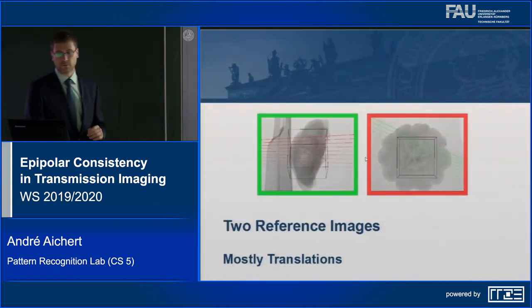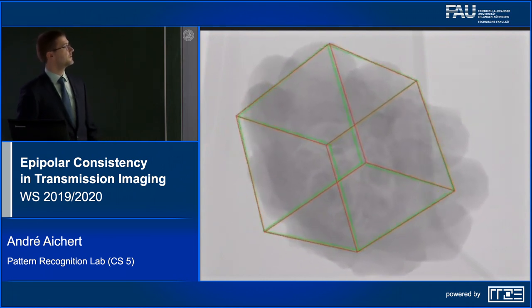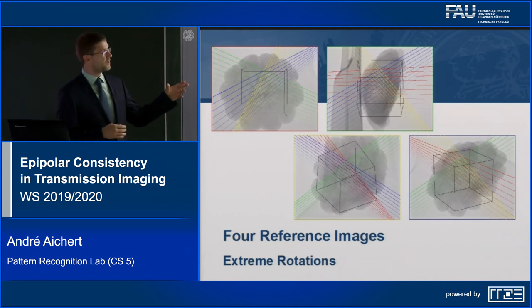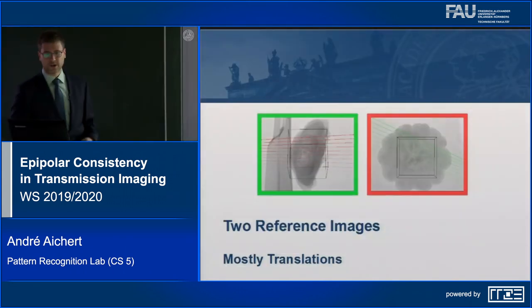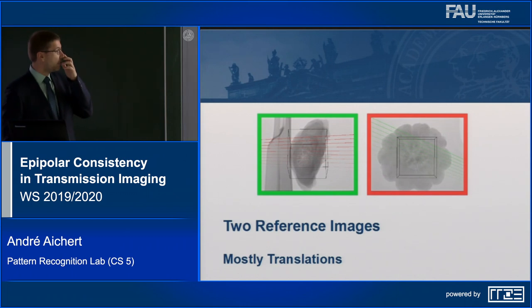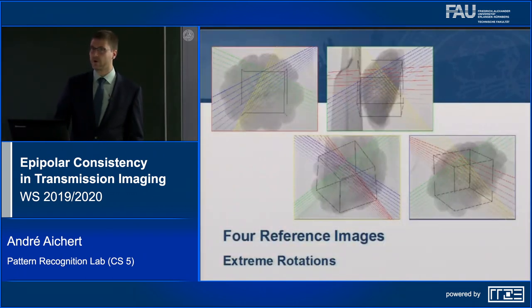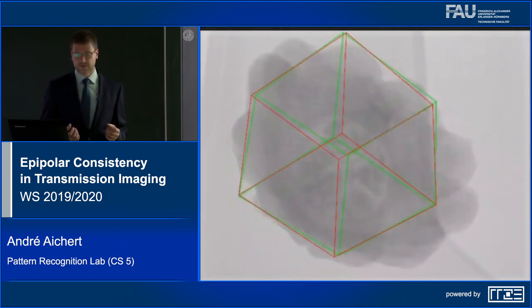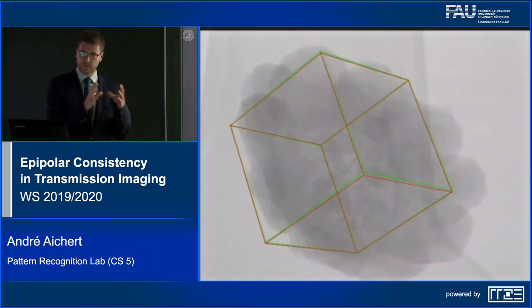A short video shows the tracking results: with two reference views, the algorithm tracks minor translational motion — green is the ground truth, red is our estimate, and it follows well. With four reference views and rather extreme motion, the red bounding box still follows the green ground truth. The remarkable point is that we have no prior knowledge of the object — only two or five reference views, far too few for a 3D reconstruction — yet we're still able to determine the 3D position.